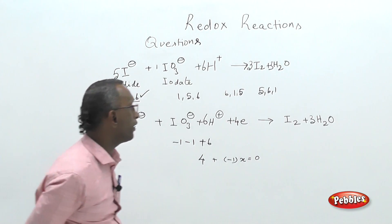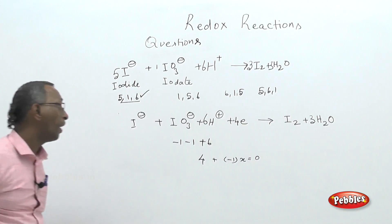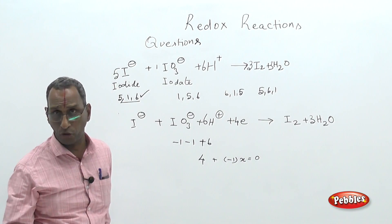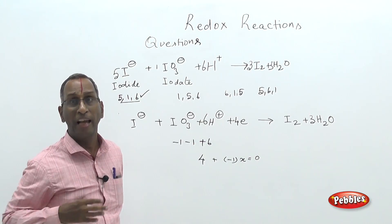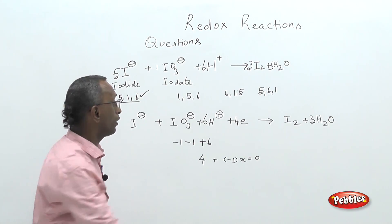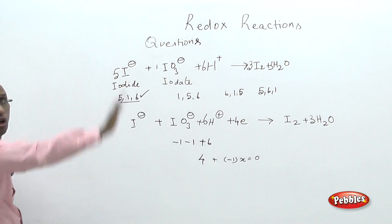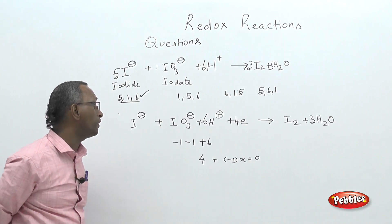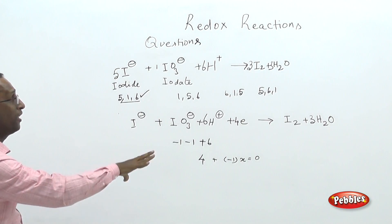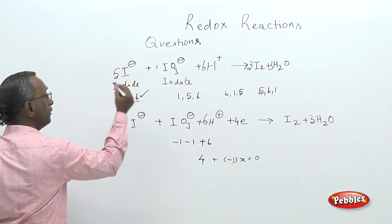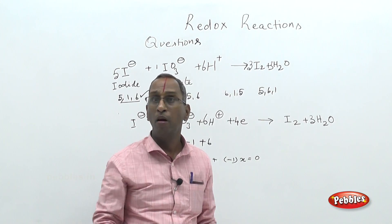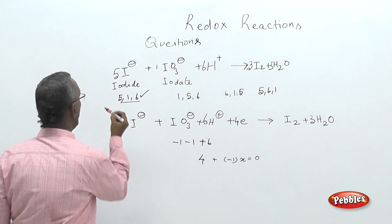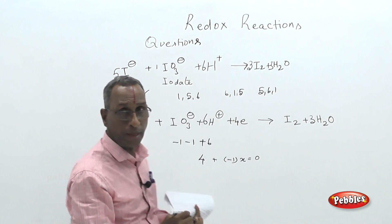The same redox equation can be approached using electronic theory of valency, where redox phenomena are explained by the addition or removal of electrons. In the first equation, charge is taken into account for mass balancing. There are two forms of this equation; the second is for understanding purposes. Choice A is the correct answer for this question.